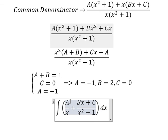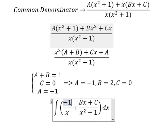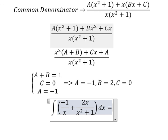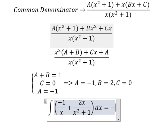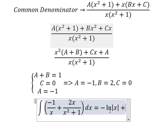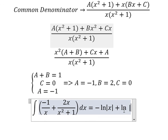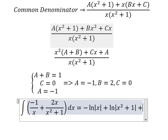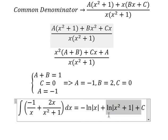So A equals to negative one, B equals to two, C equals to zero. The integration of the A term gives us negative ln of the absolute value of x. The integration of the B term gives us ln of the absolute value of x squared plus one. We put the constant C here, and that is the final answer.